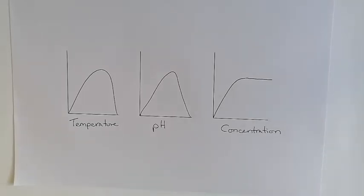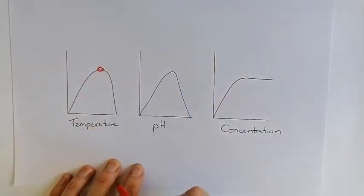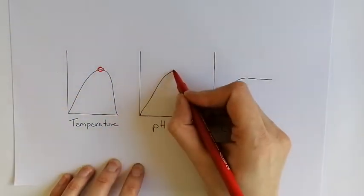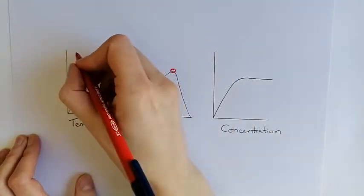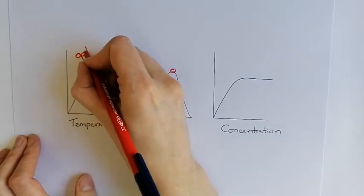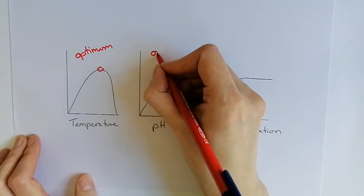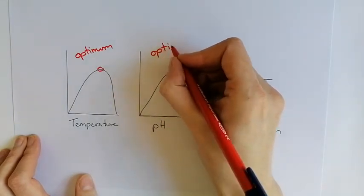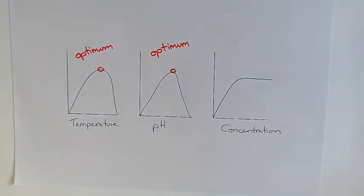Now temperature and pH, as you can see really clearly, have optimum points. So they go up to a certain point and back down again. So for both temperature and for pH, they have an optimum level. And the optimum level is the pH or the temperature at which that particular enzyme works the best that it possibly can do.